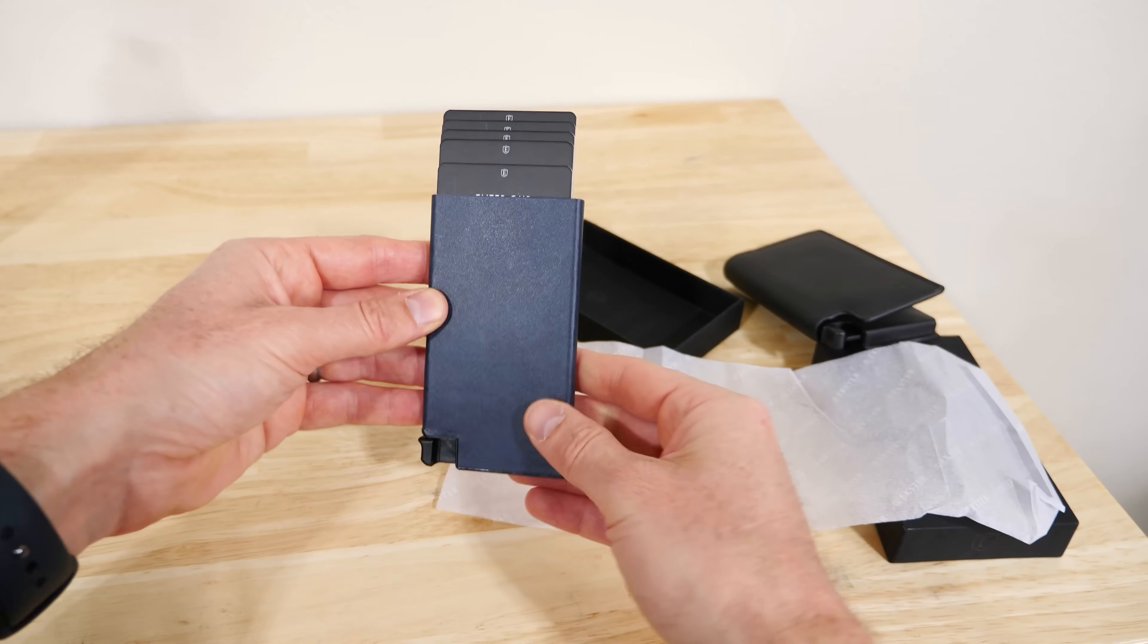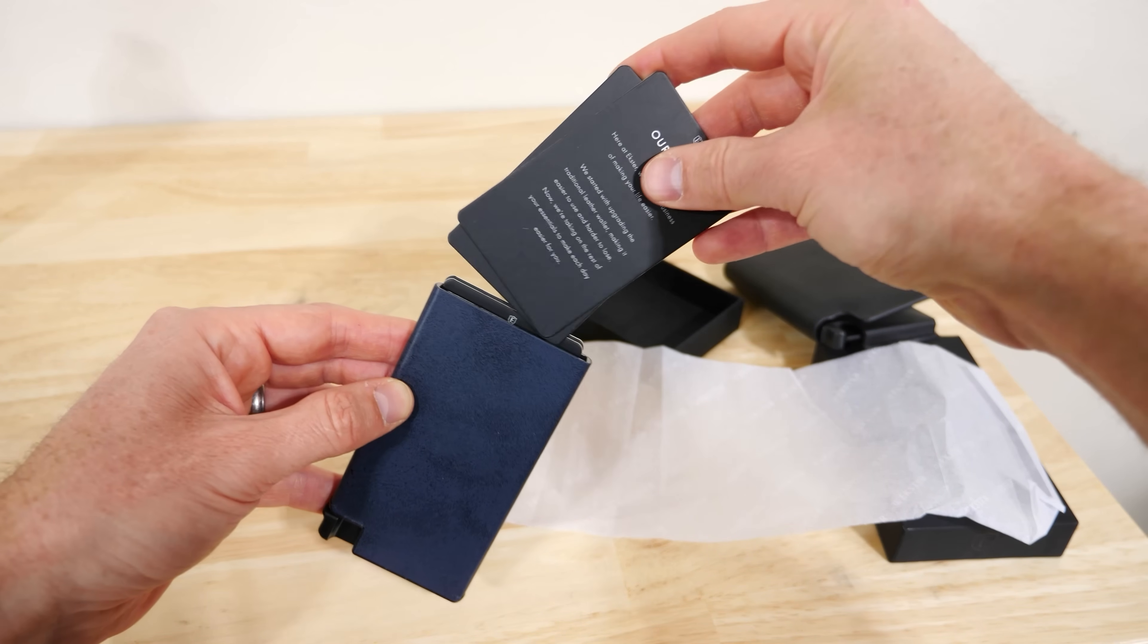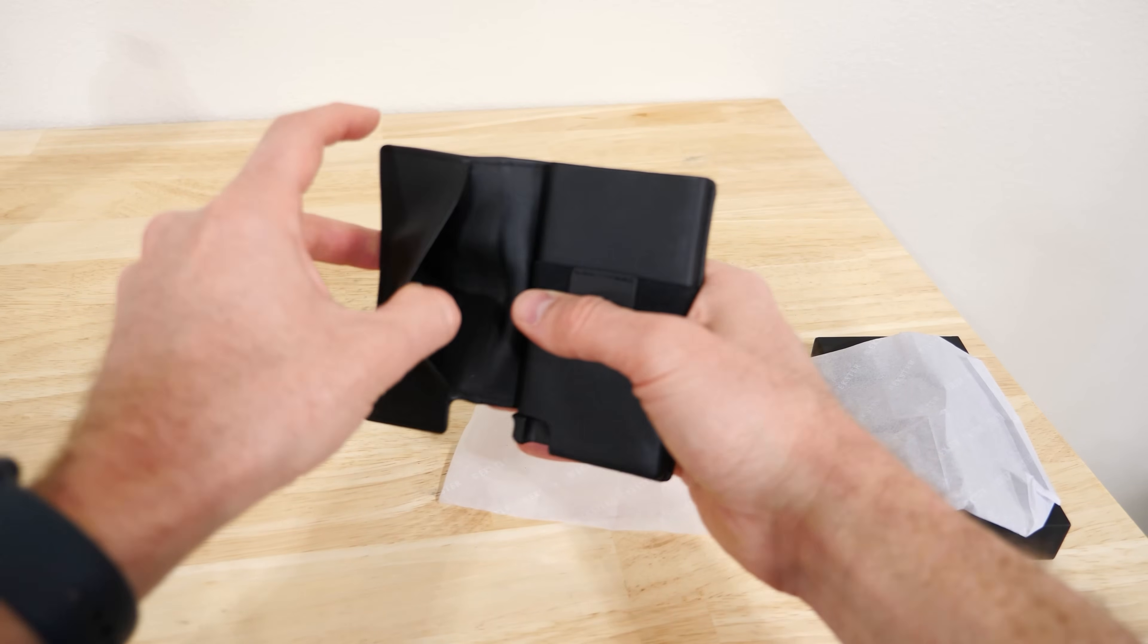And before we end, I'd like to thank Exter for sponsoring this video. Exter makes really cool minimalist wallets that are super classy and elegant looking, but also really cool. They have this really cool mechanism in them that fans out your cards so you can see them all when you push this button here. They can hold up to 15 cards. And then it has these places that you can hold cash as well.